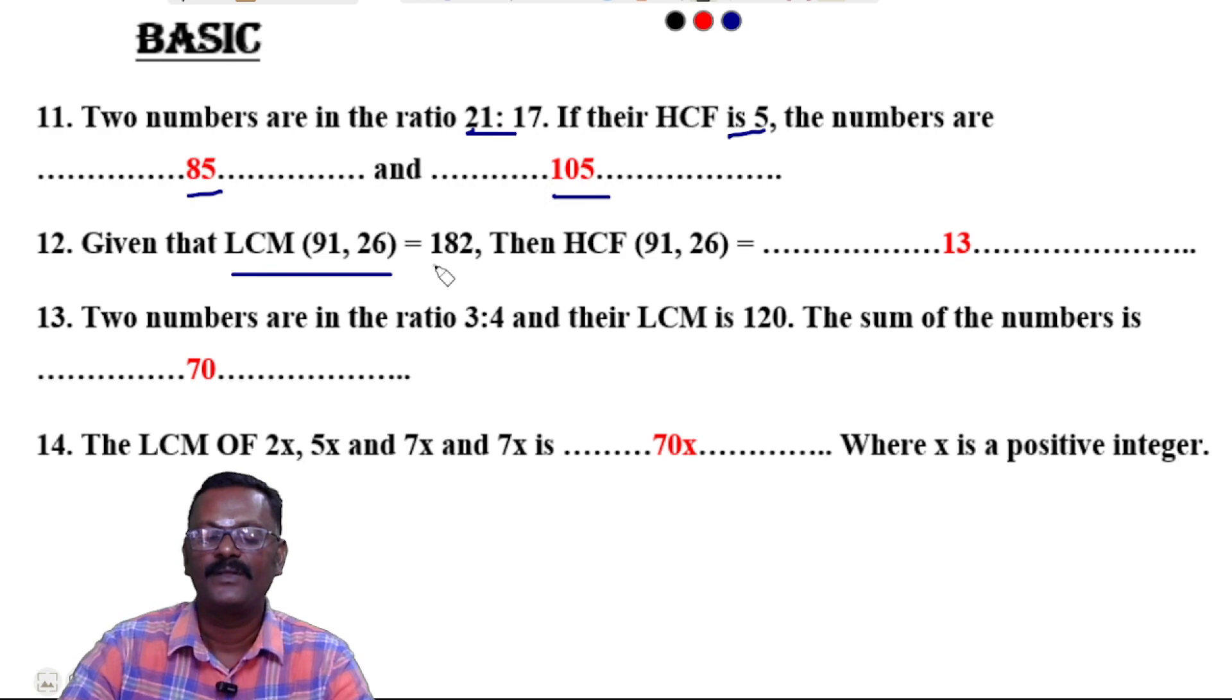Question 12: Given that LCM(91, 26) = 182, then HCF(91, 26) = 13.